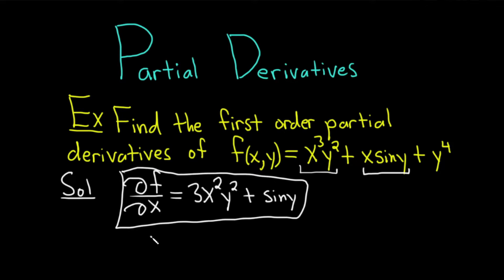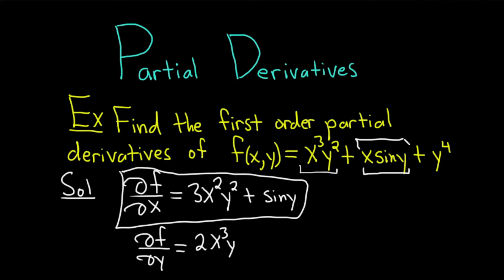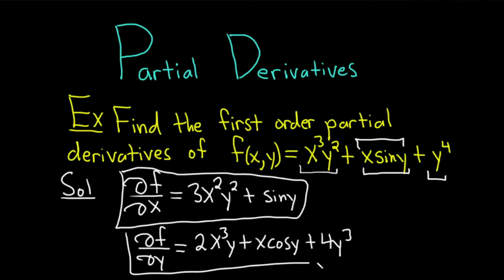Now let's find ∂f/∂y — the partial derivative of f with respect to y. In this case, we treat all the x's as constants. Looking at the first term x³y², x³ is a constant, so we differentiate y² using the power rule: bring down the 2, x³ hangs out, and we subtract 1 from the exponent to get y. For x·sin(y), x is a constant and the derivative of sin is cosine, giving us x·cos(y). Finally, differentiating y⁴ with respect to y using the power rule gives 4y³. So ∂f/∂y = 2x³y + x·cos(y) + 4y³.